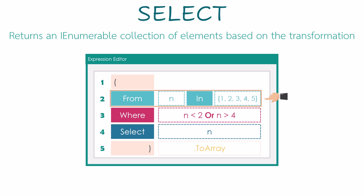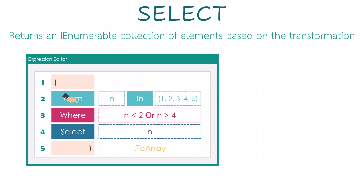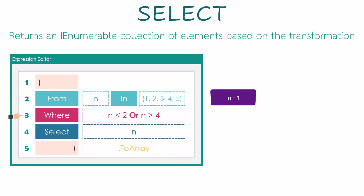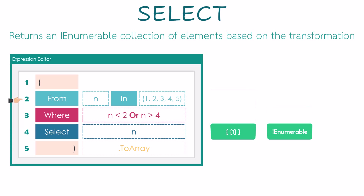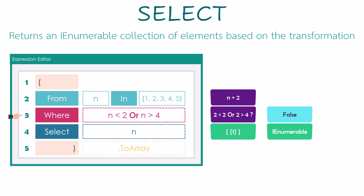It's like a foreach loop in any programming language, so n represents the numbers of the array. In the first loop we get the number 1. In the next line we check this number — if it's smaller than 2 or greater than 4. 1 is smaller than 2, so it's true. In this case we move on to the next line and select this number, which will be stored in the IEnumerable collection. Then we go back and get the number 2 and check it — it's false, so we don't move to the select statement.